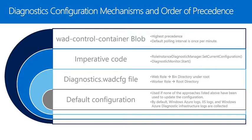When a role imports the diagnostics module by using the service definition, the diagnostics module looks for a file called diagnostics.wadcfg in the root directory of the worker role or the bin directory of the web role. If the configuration file exists in one of these locations when the diagnostics module is imported, the diagnostics monitor uses this config file for its settings. The default configuration will be used if none of the above approaches have been used to update the configuration. By default, Windows Azure logs, IIS logs, and Windows Azure Diagnostic infrastructure logs are collected locally but are not persisted to storage.